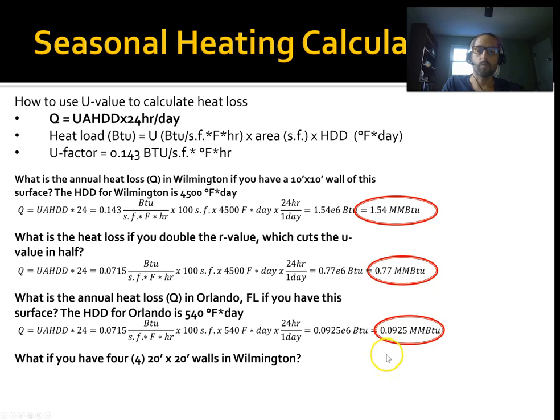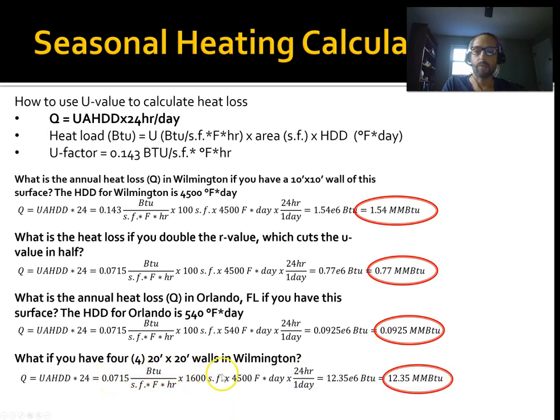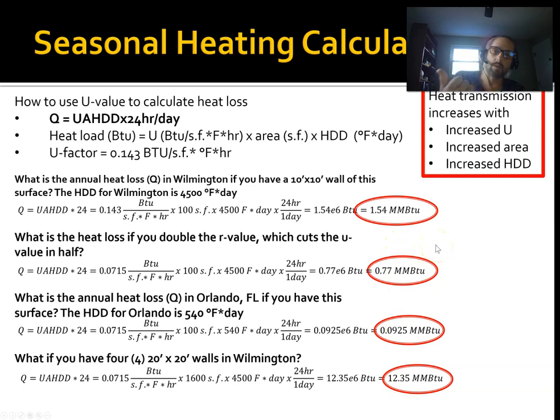What if I have four 20 by 20 walls of Wilmington? So this would be kind of a small house. It's the same, 0.0715. Now we have 1,600 square feet of surface, 4,500 degree days, 24 hours. You end up with 12.35 MMBTUs. You can see heat transmission is going to increase as you increase the U factor, as you increase the area, and as you increase HDD. This should make intuitive sense. Worse insulation means a higher U, which means you're going to increase your heat loss. Bigger surface area, increase your heat loss. Increased HDD means it's relatively colder, so you're going to increase your heat loss as well.